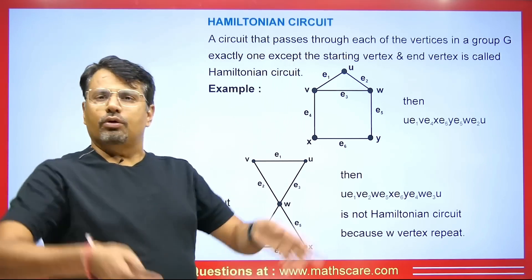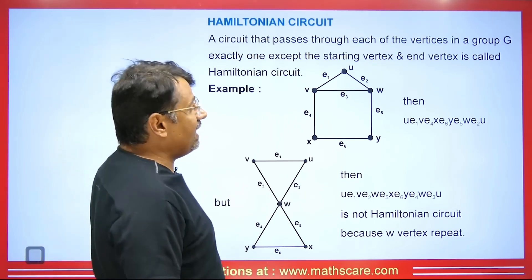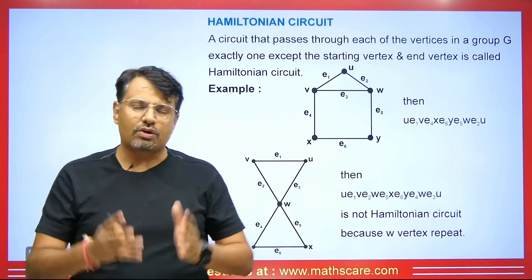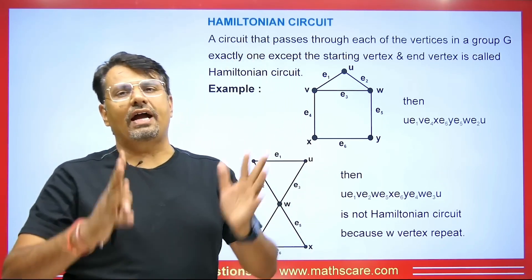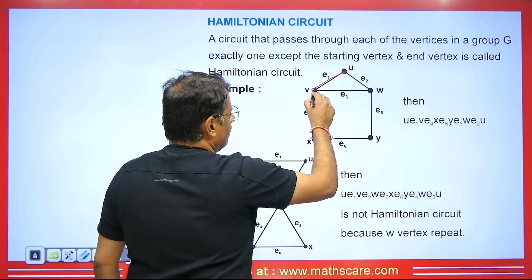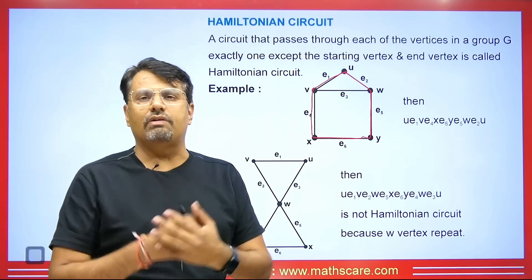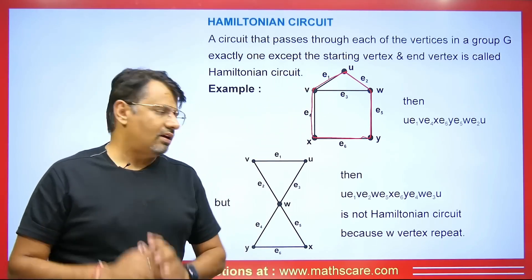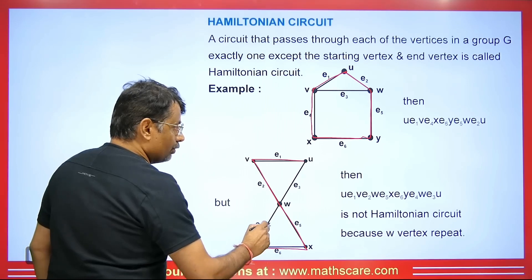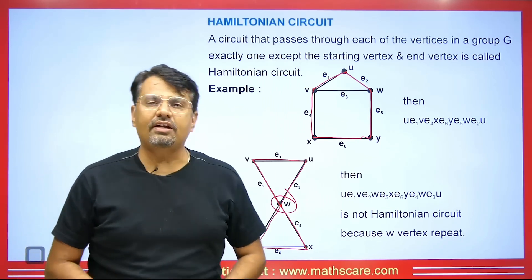We will talk about the Hamiltonian circuit. A circuit that passes through each of the vertices in a graph G exactly once — except the starting vertex, which is also the ending vertex — is called a Hamiltonian circuit. So the starting and ending vertex can repeat; all other vertices should not be repeated; all vertices should be covered; and the circuit must be closed. For example, starting here, going here, here, here, and returning — that is a Hamiltonian circuit. However, if vertex W repeats on both sides when you try to close it, then it will not be a Hamiltonian circuit.